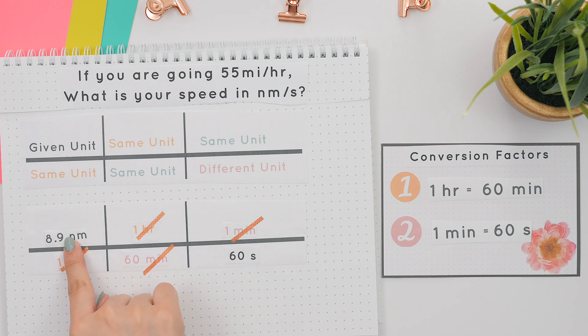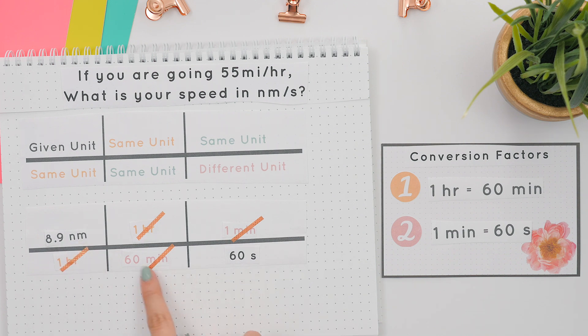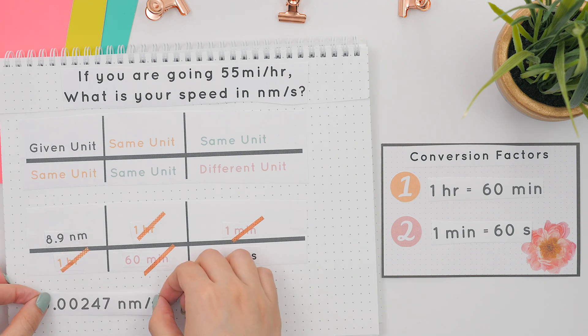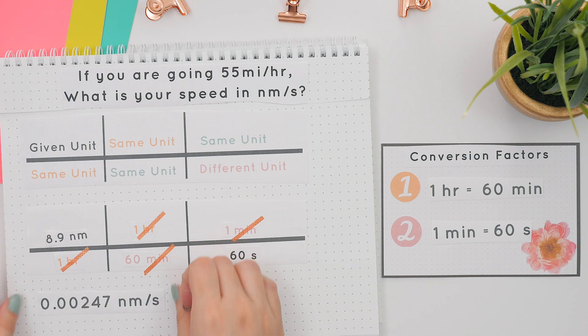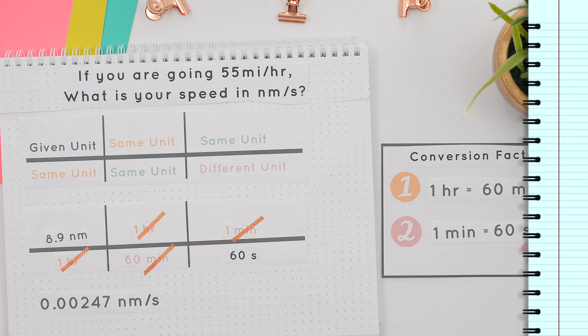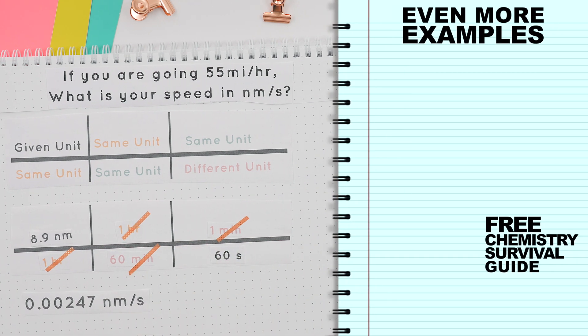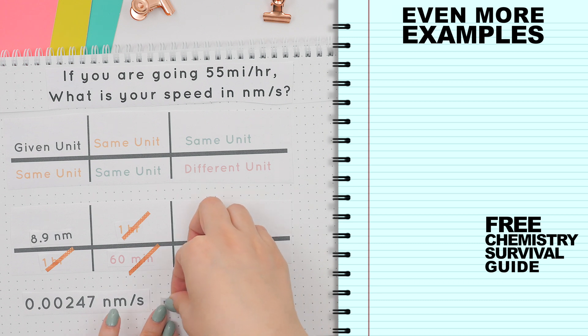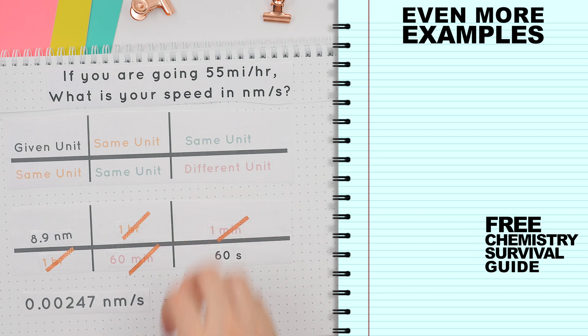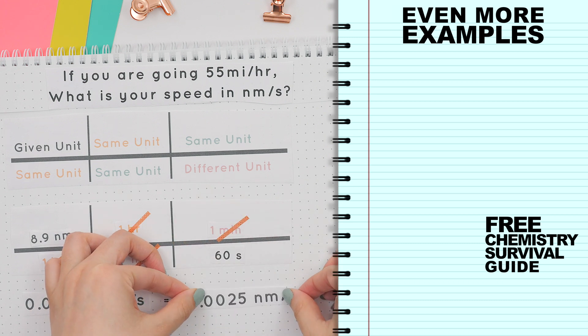Now divide the 8.9 by the bottom numbers multiplied and we'll get this value — but make sure to round to two sig figs, since 8.9 only has two sig figs. And this is the correct value.